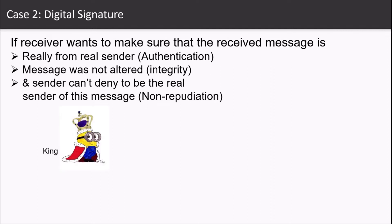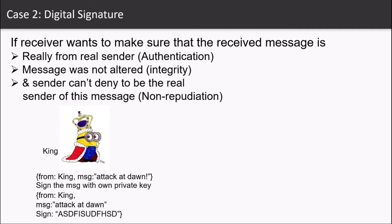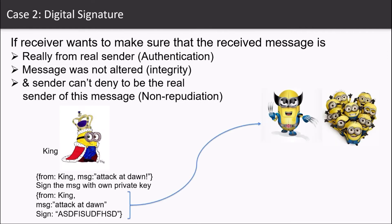To explain this, let me give you a very interesting example of minions where a king wants to send a message to the soldiers: attack at dawn. So the message includes from king and message attack at dawn. The king signs the message with its own private key, attaches the signature along with the message and sends it to the soldiers.